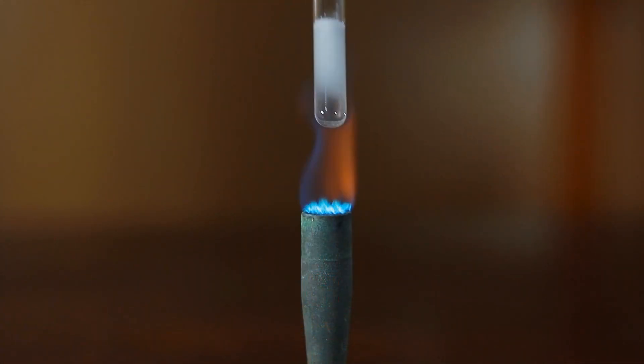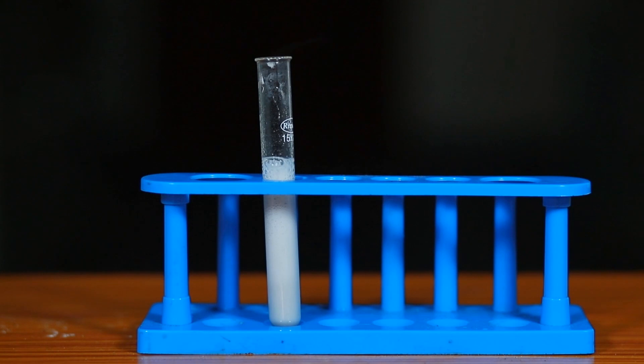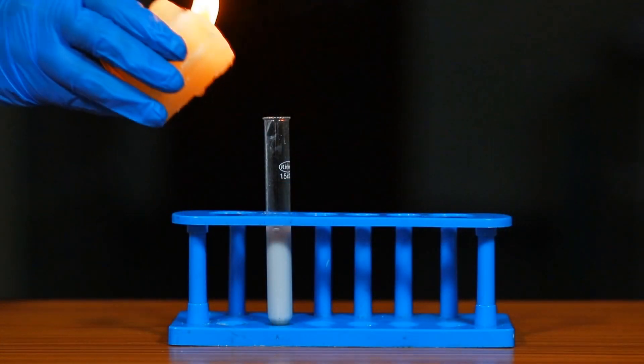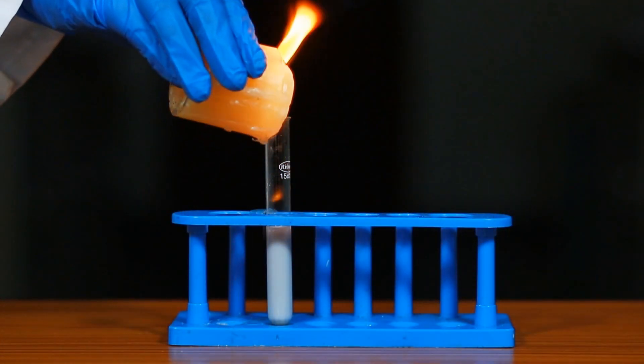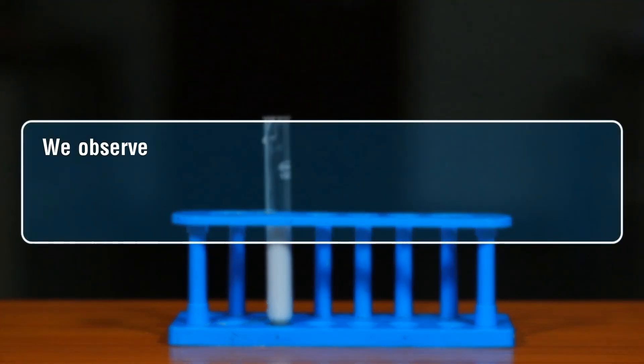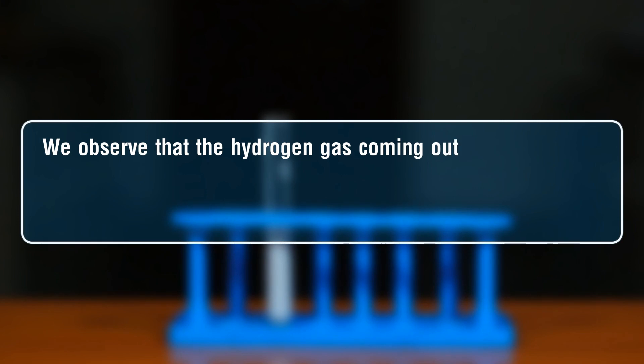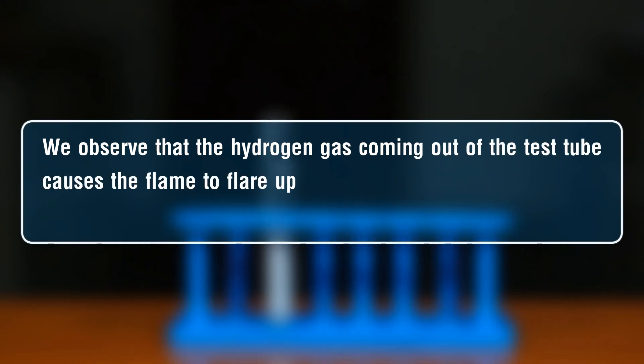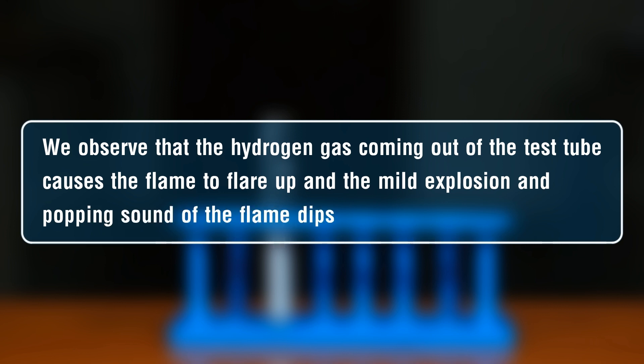Heat the test tube using a Bunsen burner and observe the effervescence and colorless gas coming out through the test tube mouth from the reaction mixture. Bring the lighted candle to the mouth of the test tube when the colorless gas is liberating. We observe that the hydrogen gas coming out of the test tube causes the flame to flare up with a mild explosion and popping sound as the flame is extinguished.